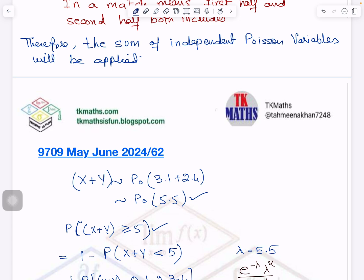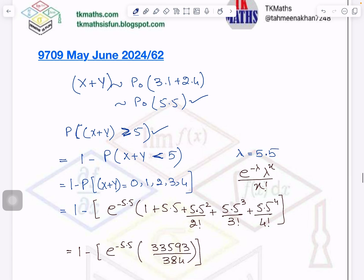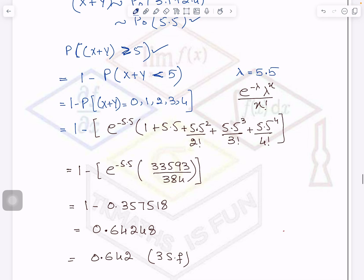So here I have added up the lambdas and this is the probability I will calculate. So whenever it is in Poisson greater than we always do 1 minus less than. So equals to is with 5. So for less than we will not include equals to. So less than 5 is 0, 1, 2, 3, 4. I have applied in the formula and I got the probability.